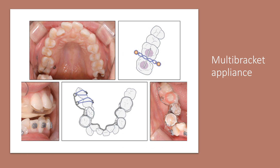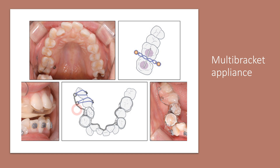The second appliance which may be used to treat such patients is called multi-bracket appliances. Multi-bracket appliances are those appliances where the brackets have different options. As seen in this diagrammatic picture, elastics are placed to apply buccal force to the lower molar so it can be placed more buccally and therefore improve contact between the upper and lower molar.